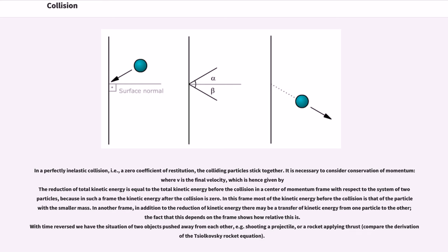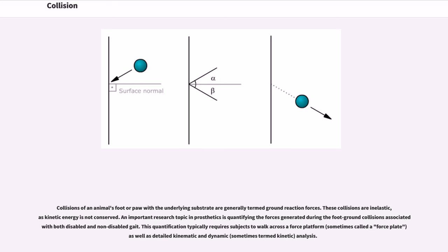Collisions of an animal's foot or paw with the underlying substrate are generally termed ground reaction forces. These collisions are inelastic, as kinetic energy is not conserved. An important research topic in prosthetics is quantifying the forces generated during the foot-ground collisions associated with both disabled and non-disabled gait. This quantification typically requires subjects to walk across a force platform as well as detailed kinematic and dynamic analysis.